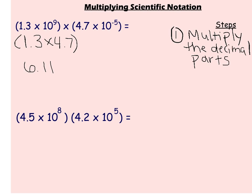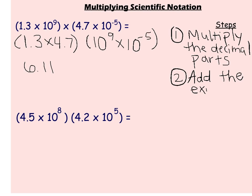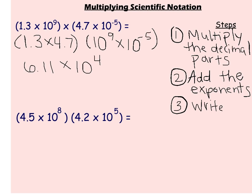The second step is to deal with the parts that have the base 10 to a power. So I have 10 to the power of 9 and 10 to the power of negative 5. Because of our exponent rules, when I have the same base I can add the exponents together when multiplying. So I add 9 plus negative 5, which gives me 10 to the 4th.